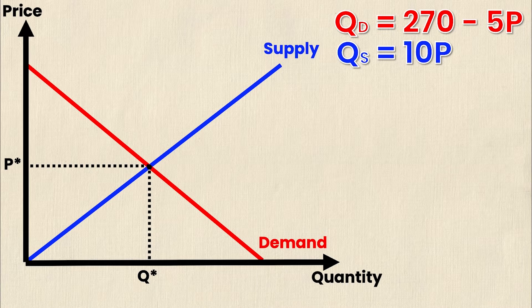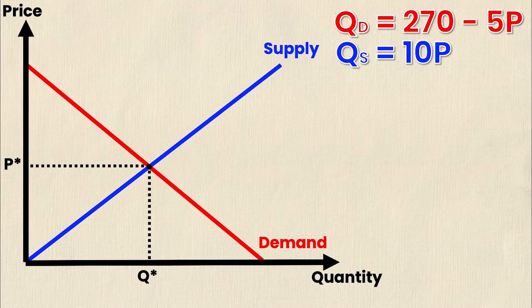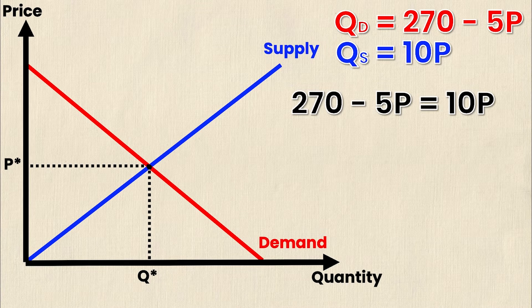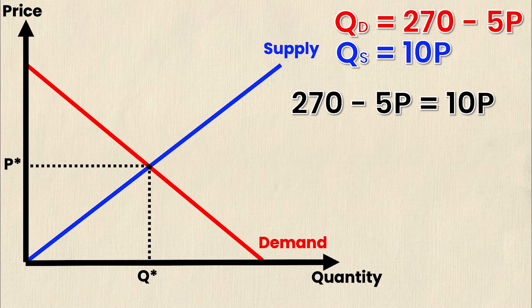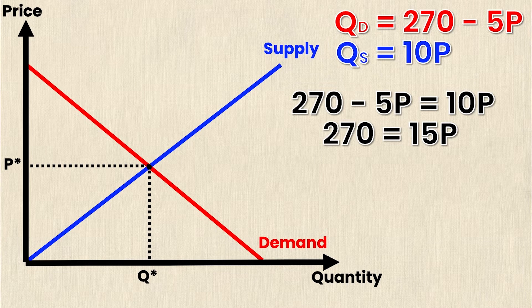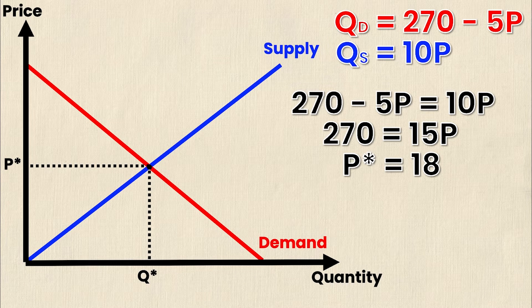Similar to calculating total surplus, the first thing we need to do is calculate P star and Q star. You do that by setting QD equal to QS and then solving. So setting the supply and demand equations equal to one another we get 270 minus 5P equals 10P. Simplifying this we get 270 equals 15P and finally P star equals 18.